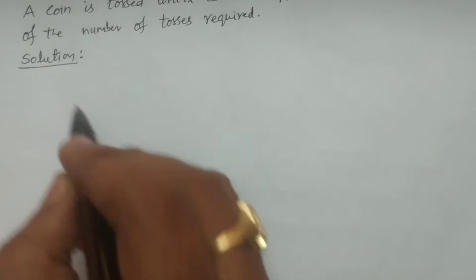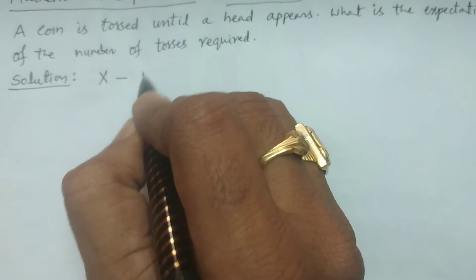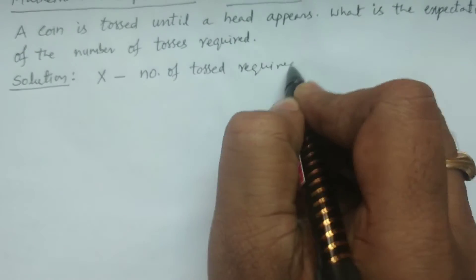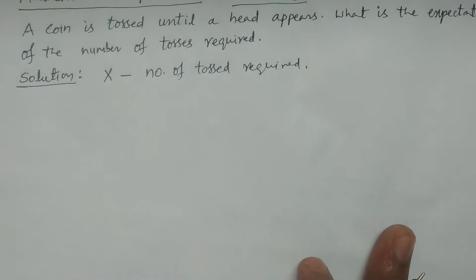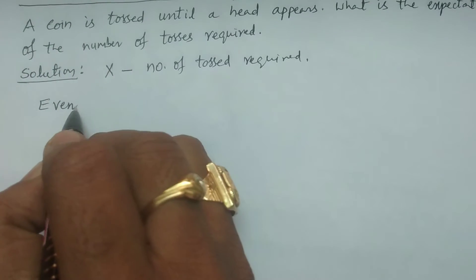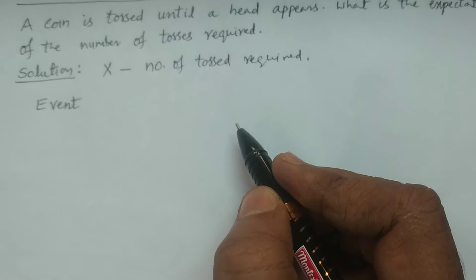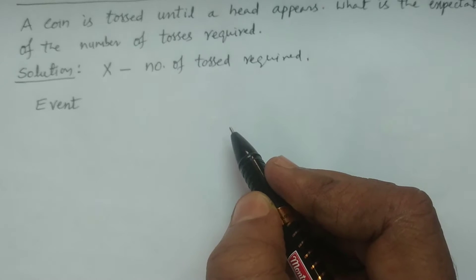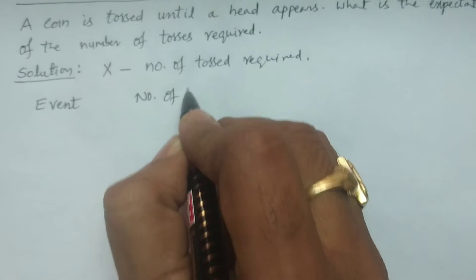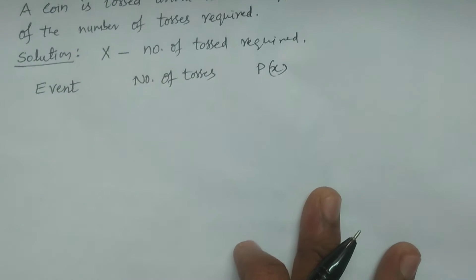I consider X, denoted as the number of tosses required. I will set up three columns: Event, Number of Tosses (our random variable X), and Probability P(X). These are the three columns I consider.